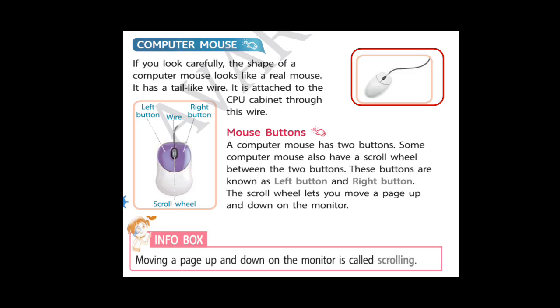Let's read about mouse buttons. A computer mouse has two buttons. Some computer mice also have a scroll wheel. You can see in the figure, at the center, here is a scroll wheel which rotates the computer screen's page. These buttons, the left button and the right button, help us to work on the computer.